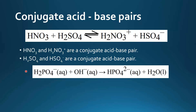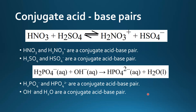For the last example, to identify the conjugate acid-base pairs we look for two species that differ by a proton. So H₂PO₄⁻ and HPO₄²⁻ are a conjugate acid-base pair, and OH⁻ and H₂O are another conjugate acid-base pair.